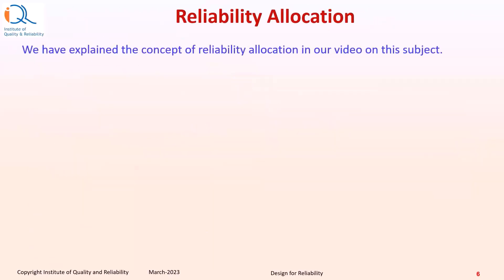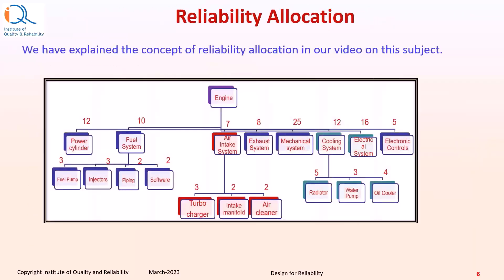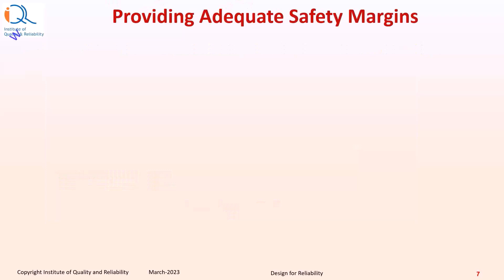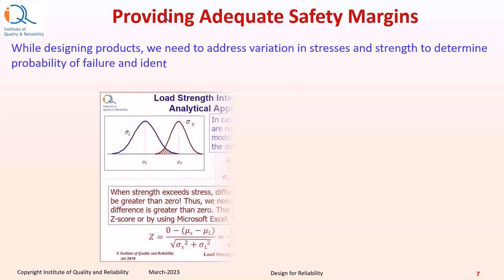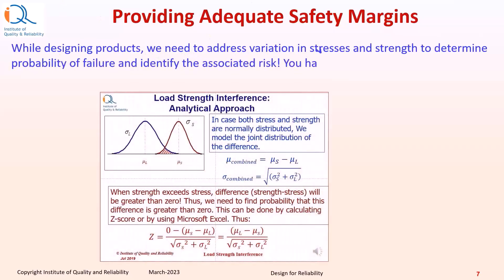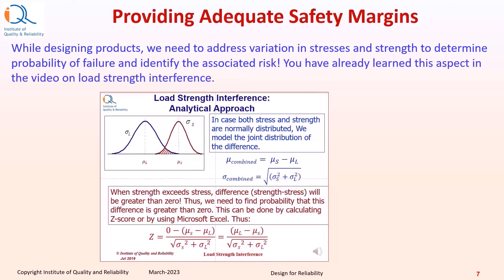We have explained the concept of reliability allocation in our video on this subject. While designing products, we need to address variation in stresses and strength to determine probability of failure and identify the associated risk. You have already learned this aspect in the video on load strength interference.